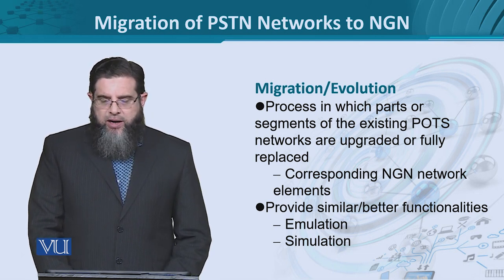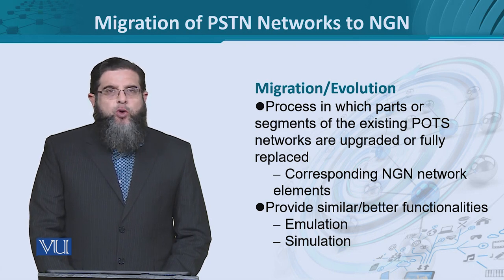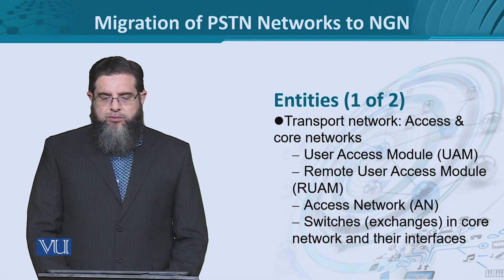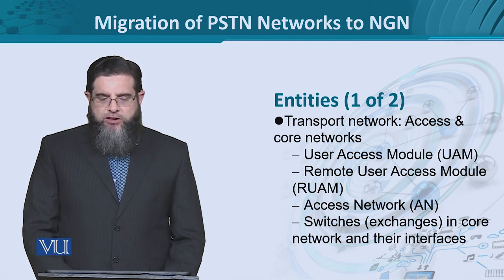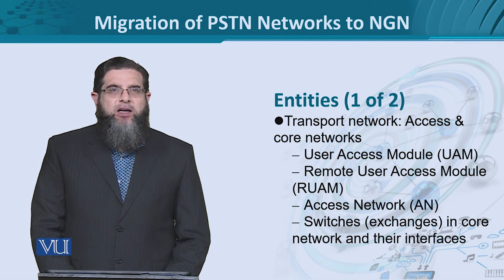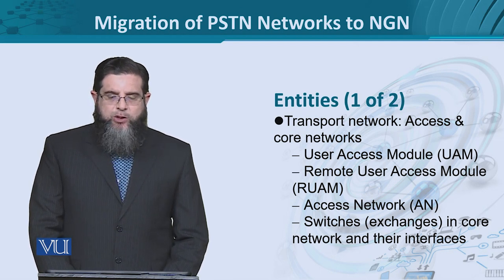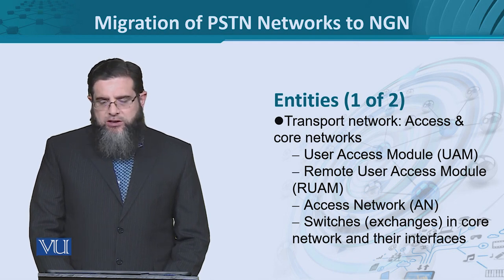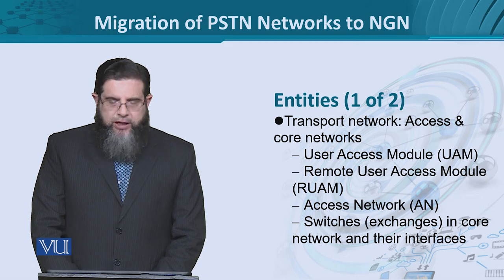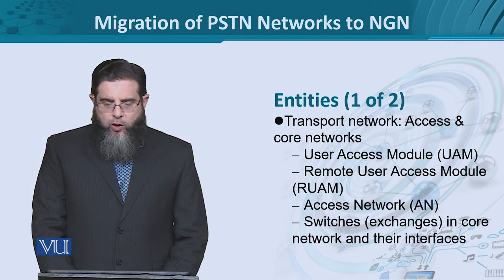We can achieve this by considering the functionalities of different network elements, which could be replaced by adopting the emulation approach or the simulation approach. This emulation or simulation would affect a number of entities — at the transport network, for instance, the access and core networks, the user side, the network side, the access network itself, and the classical form of switching known as exchange on both core and access sides, along with all their interfaces.